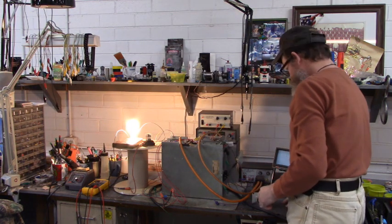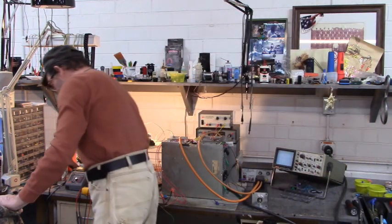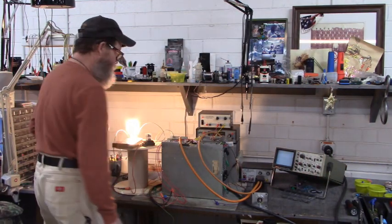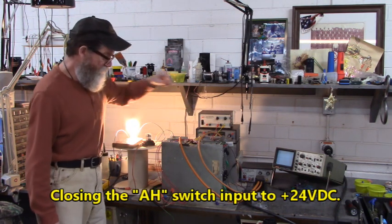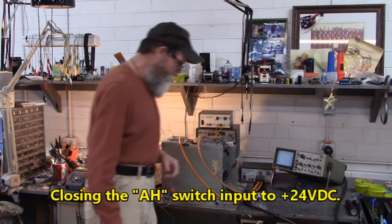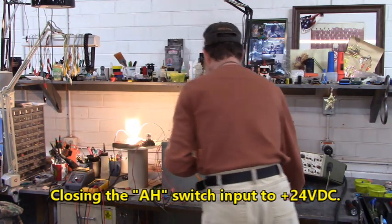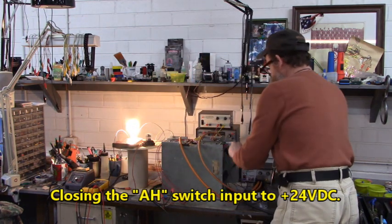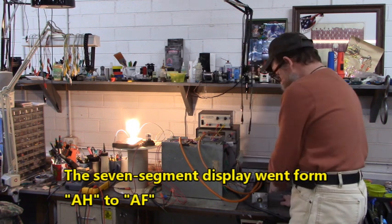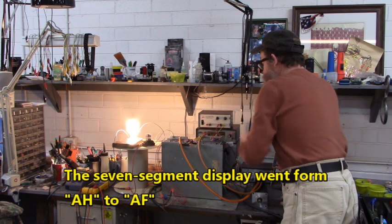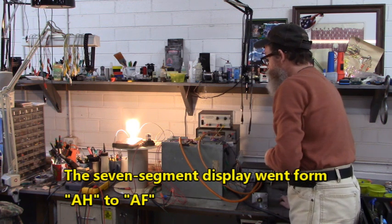Now the switch that I'm closing to run the motor is the AH switch. You have an RF switch and an AH switch. When I close the AH switch, the motor runs and the seven segment displays show AF.